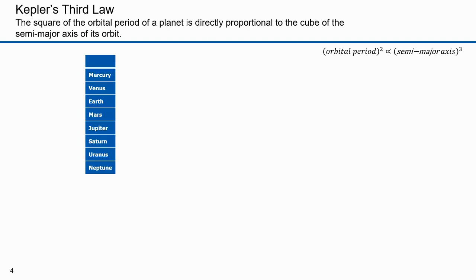We'll fix this with Kepler's third law. He derived this 10 years after deriving his first two laws. His third law states that the square of the orbital period of a planet is proportional to the cube of the semi-major axis of the orbit.